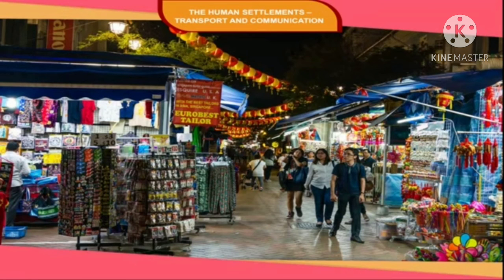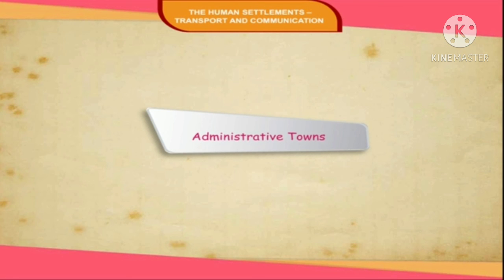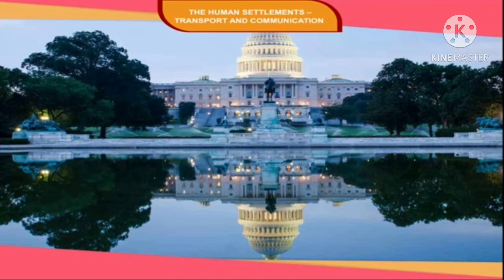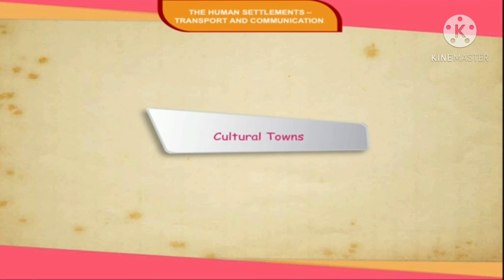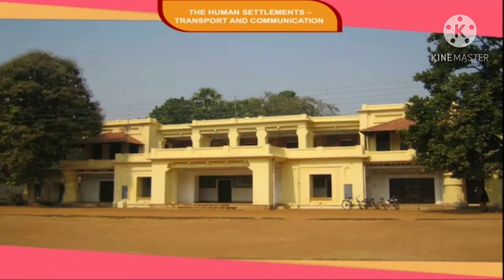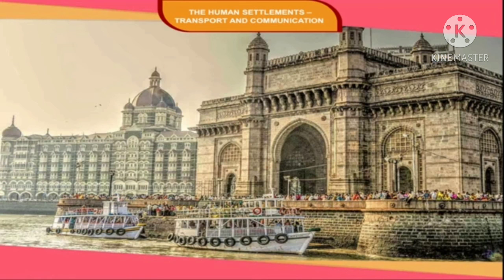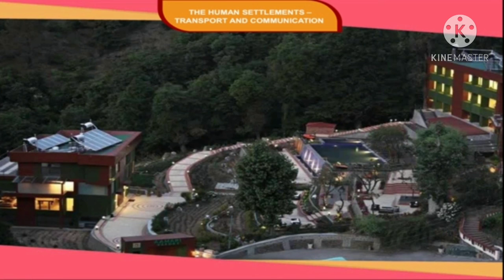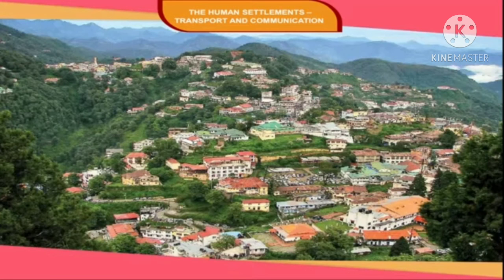Market towns act as market sites for the exchange of goods and are mainly collection and distribution centers. Administrative towns perform the function of administration — cities like Delhi, Washington D.C., and London are some examples. Cultural towns are known for the promotion of culture and education; Shantiniketan at Bolpur is an example. Port towns perform the function of a port, like Mumbai, Vishakhapatnam, etc. Resort towns are known for tourist attractions, for example, Nainital, Mussoorie, and Shimla.